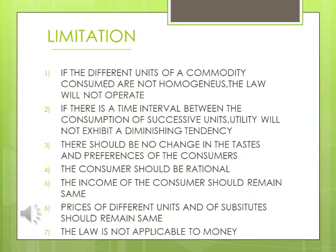Fourth, the law of diminishing marginal utility assumes the consumer should be rational. Fifth, the income of the consumer should remain the same — any change in income would affect the operation of the law.